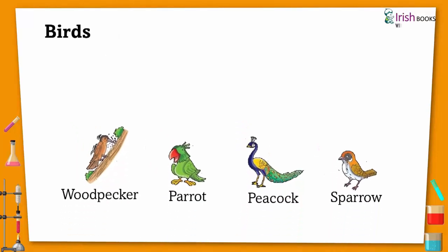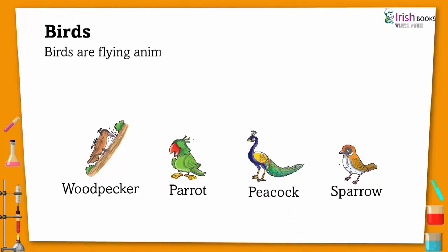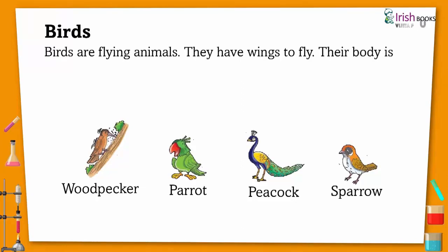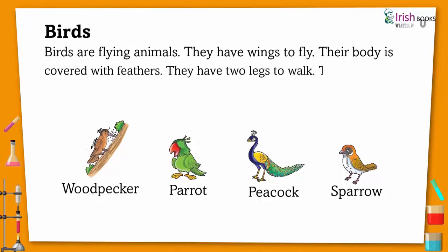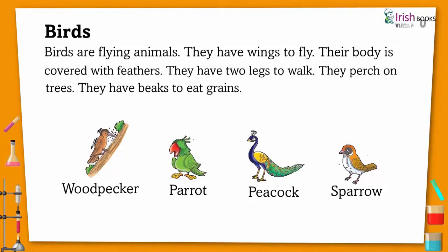Birds are flying animals. They have wings to fly. Their body is covered with feathers. They have two legs to walk. They perch on trees. They have beaks to eat, like woodpecker, parrot, peacock, sparrow.